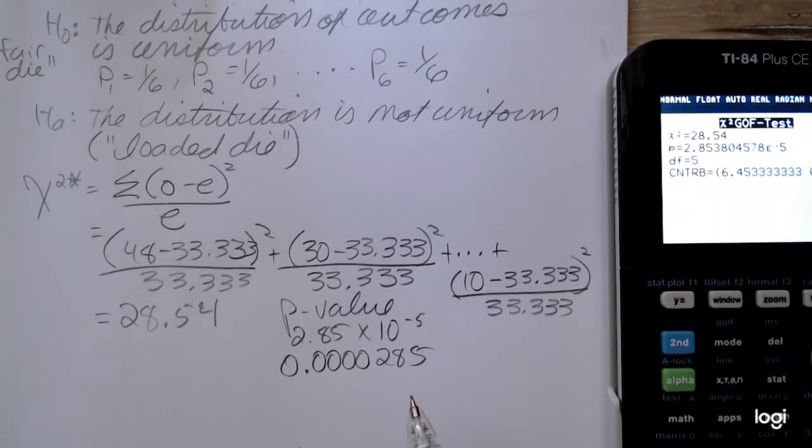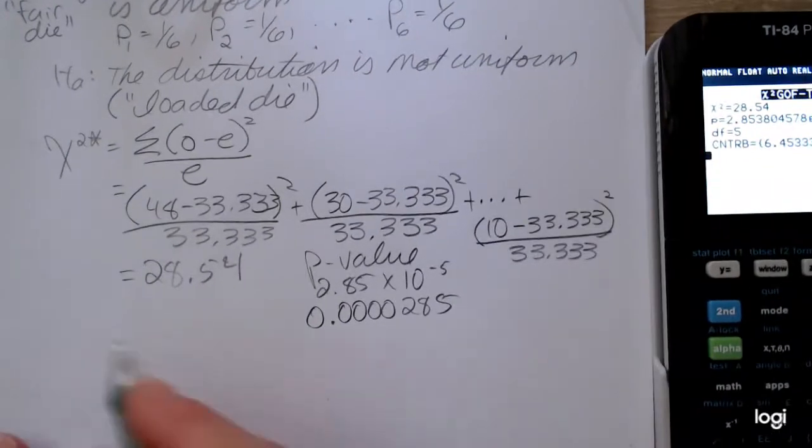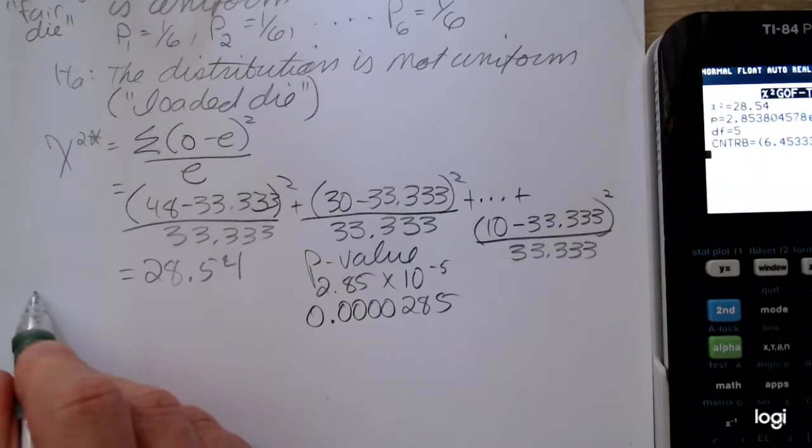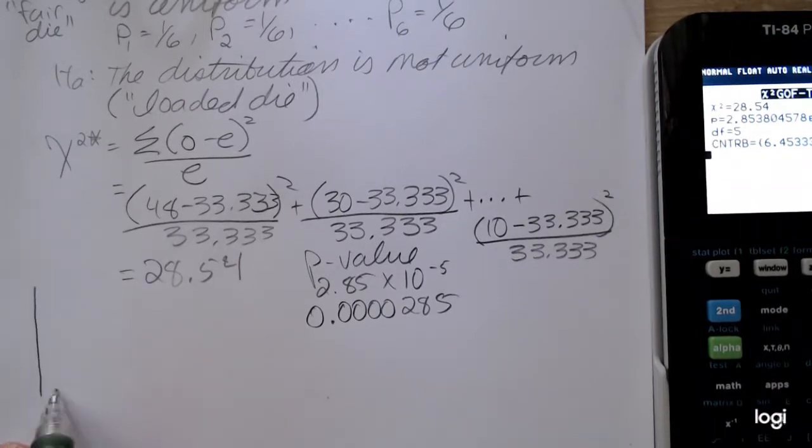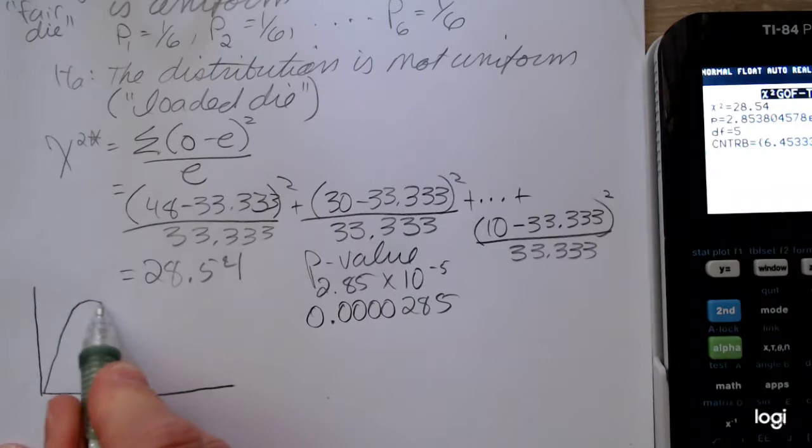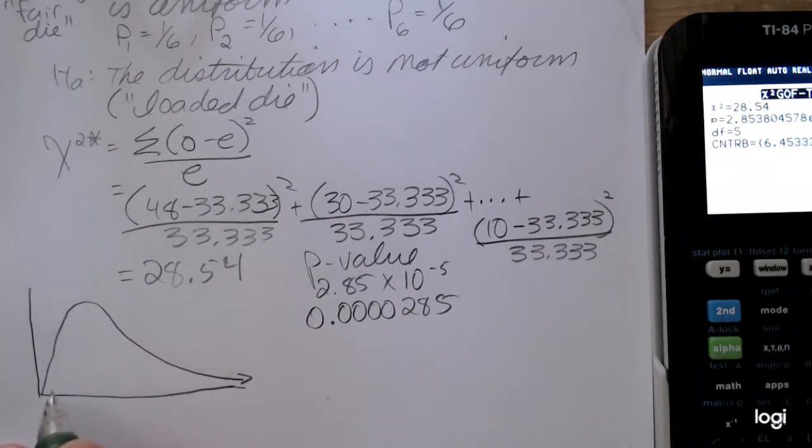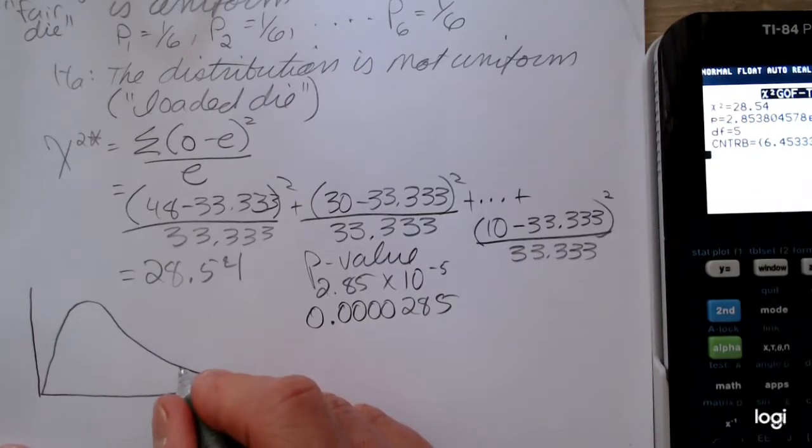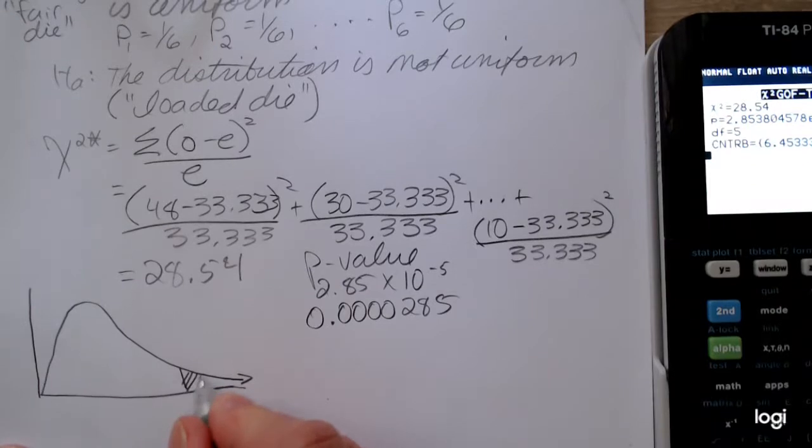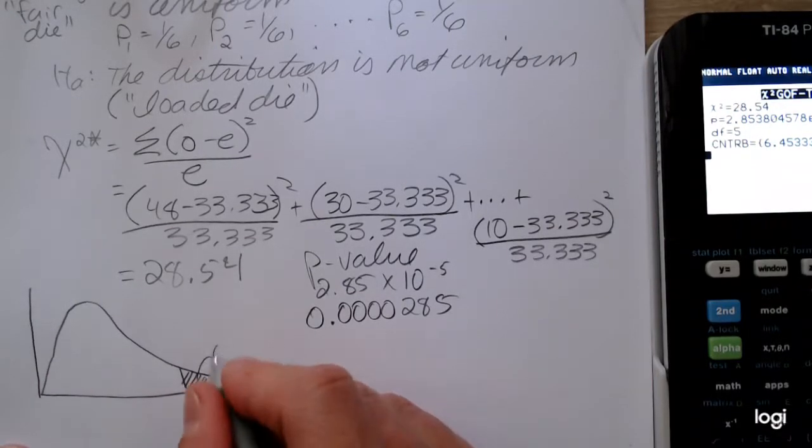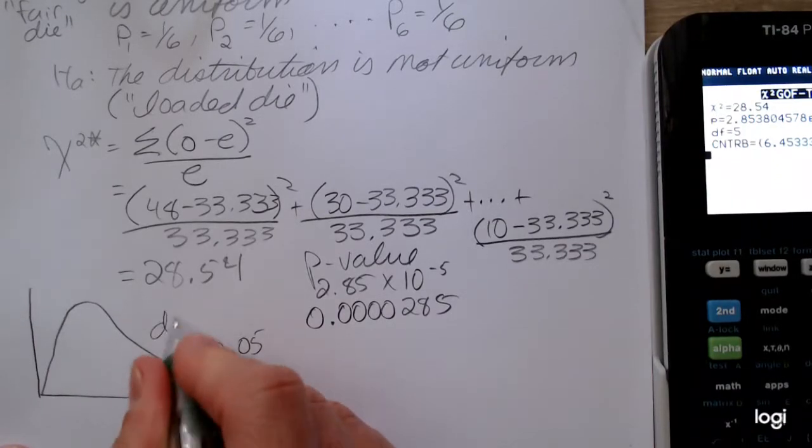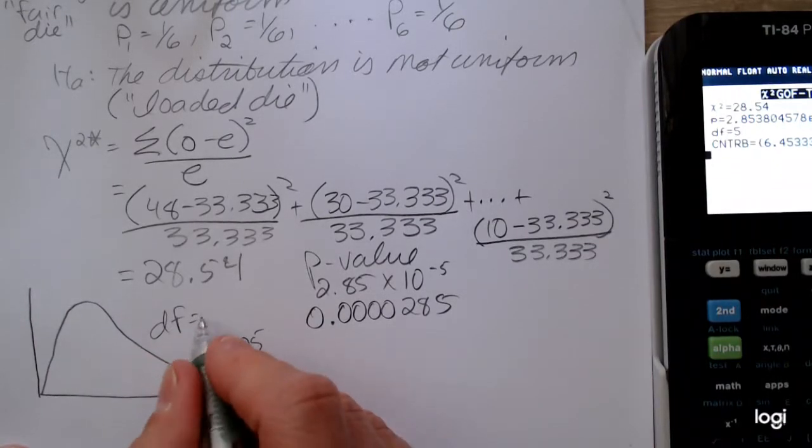So one method to make the decision is to use the critical value method. So I'm going to do that real quick. The chi-square distribution is skewed right. So you want to draw something reasonably skewed right. This may not be exactly the correct representation, but it's a visual aid. And in the problem, I'm told to use a level of significance as 0.05.